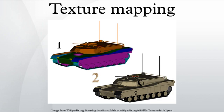Every vertex in a polygon is assigned a texture coordinate either via explicit assignment or by procedural definition. Image sampling locations are then interpolated across the face of a polygon to produce a visual result that seems to have more richness than could otherwise be achieved with a limited number of polygons.